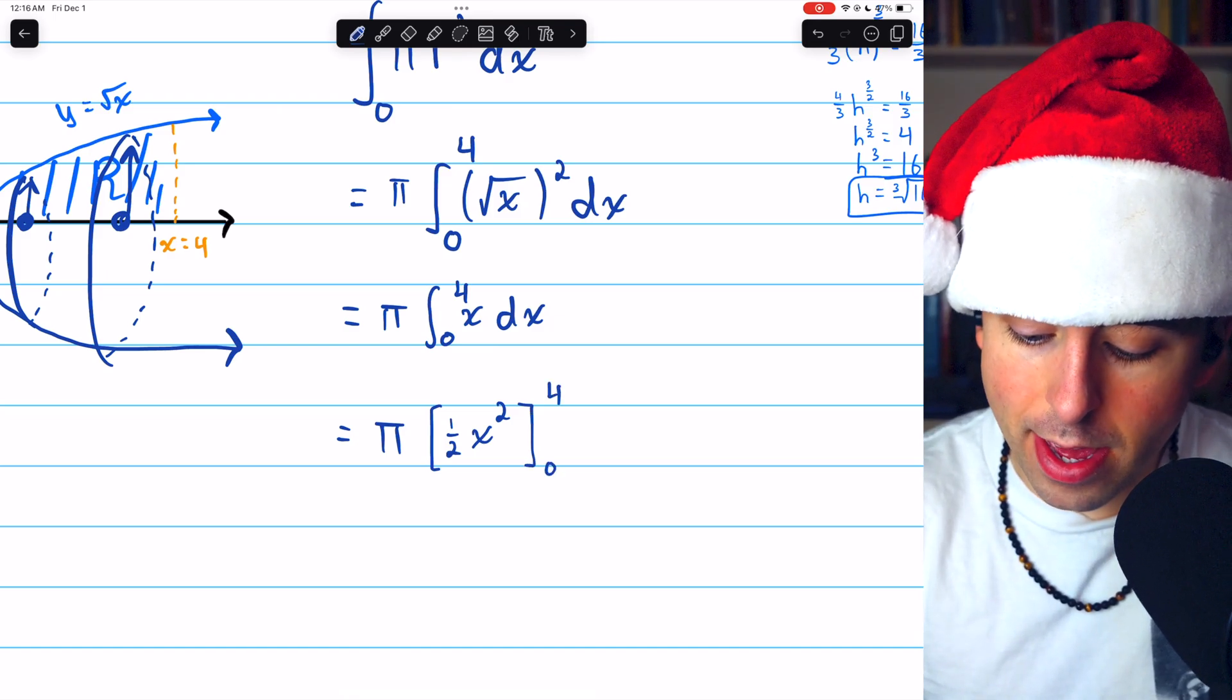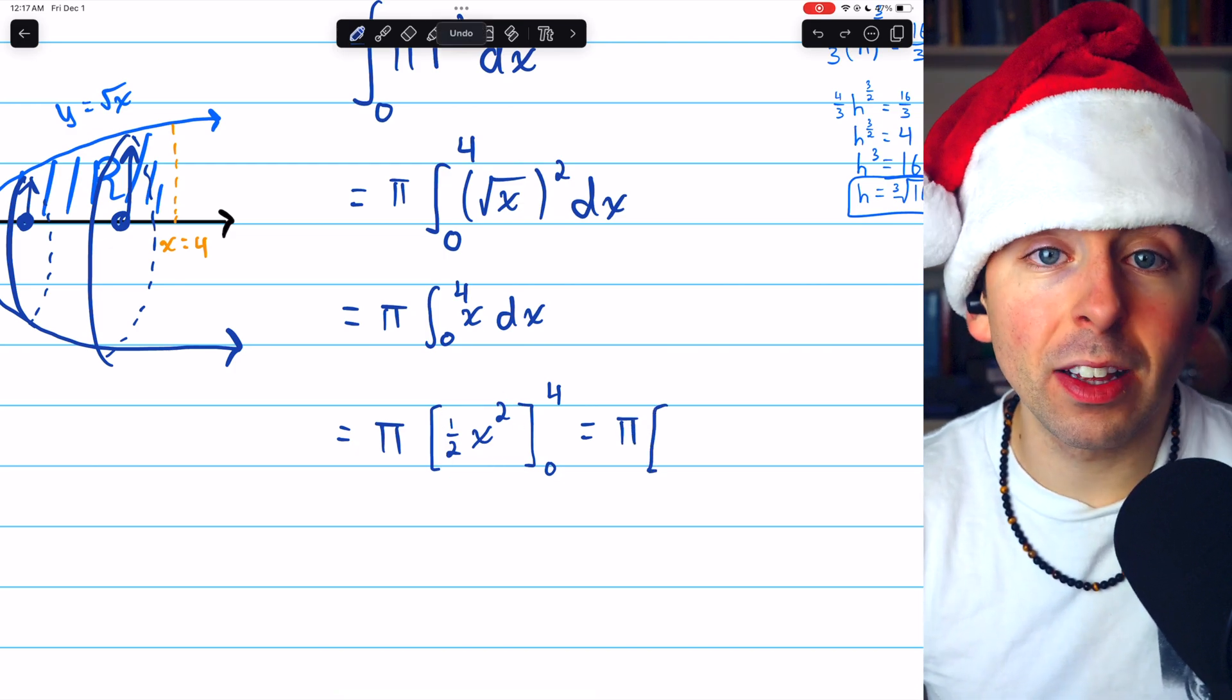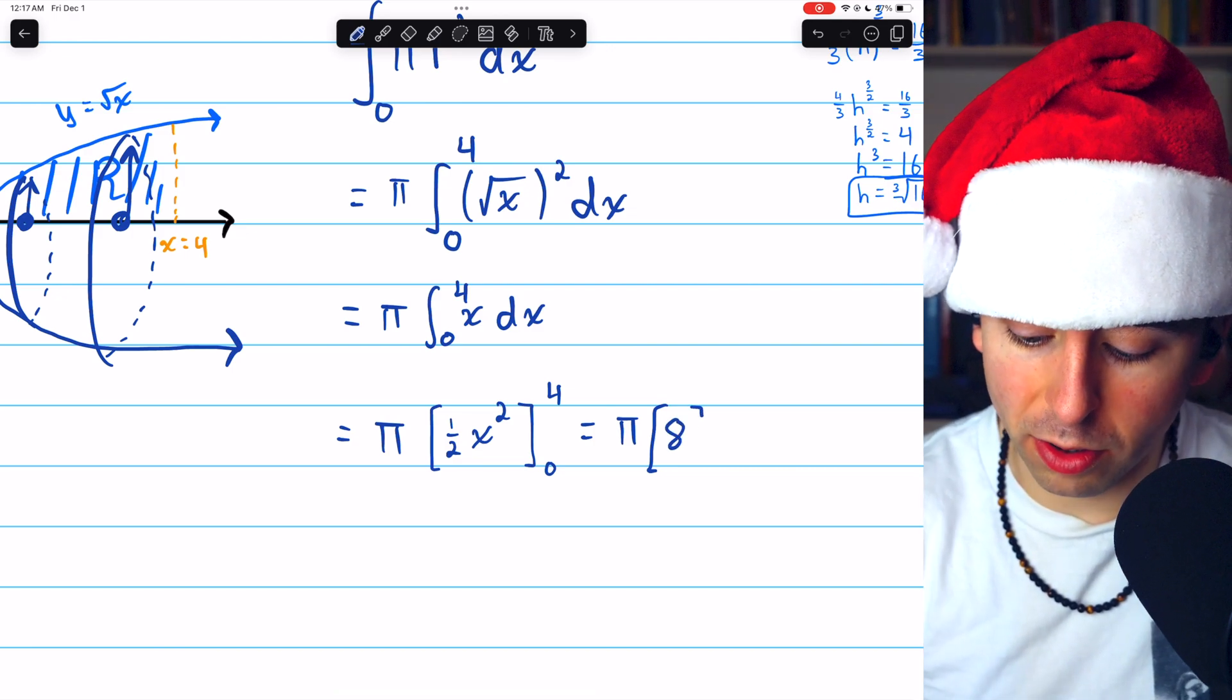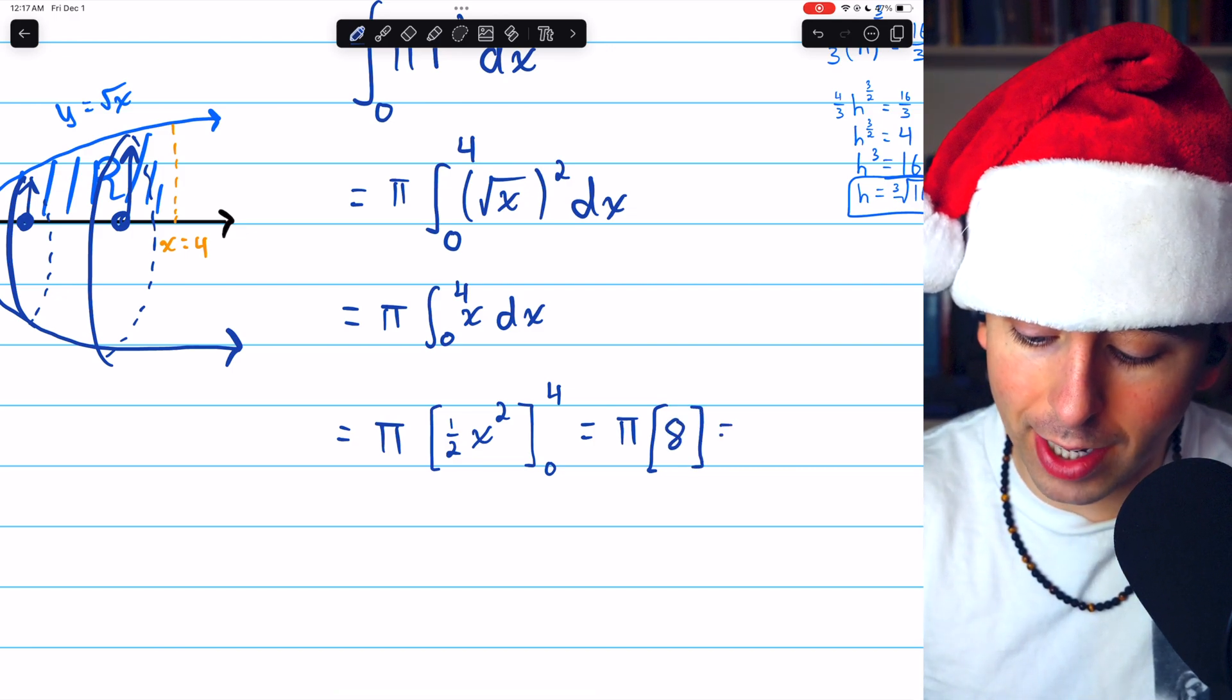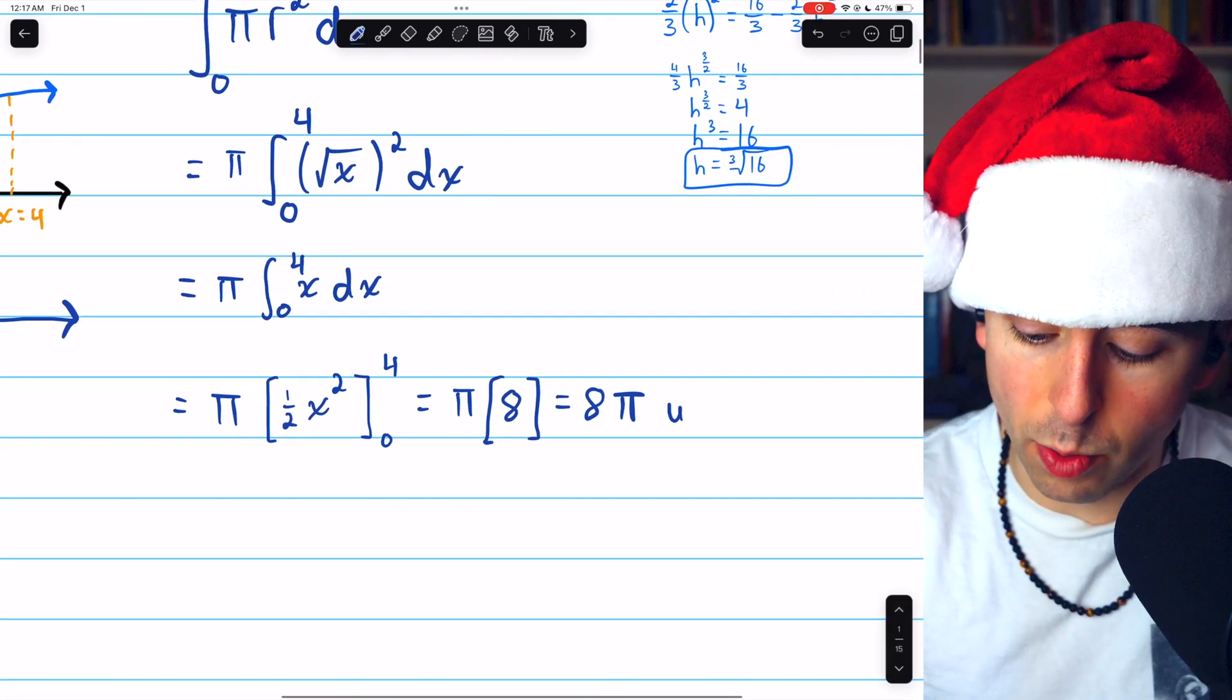Plugging in the upper bound is going to give us 1 half of 4 squared. So that's 1 half of 16, which is 8. Plugging in 0 will just give us 0. And so our final answer for the volume is 8 pi. And we could say units cubed.